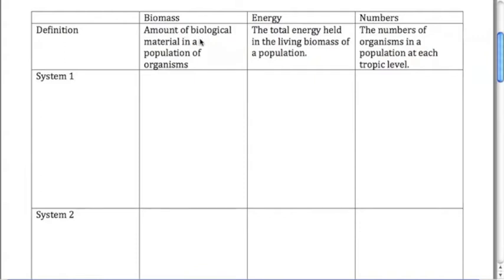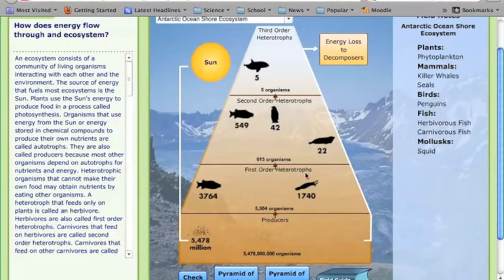First read through these definitions quickly with me. Biomass is talking about the biological material in a population. Energy is the energy held by that biomass. And then the numbers are the actual numbers of organisms at each trophic level as you just saw in this example here.